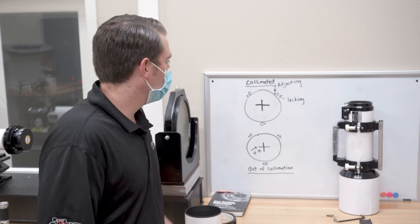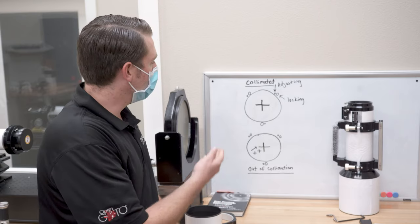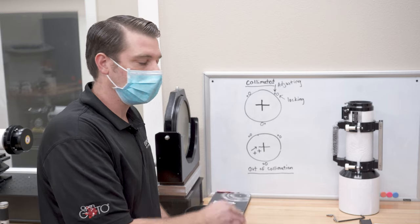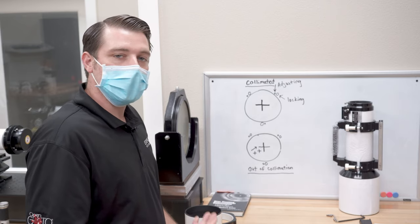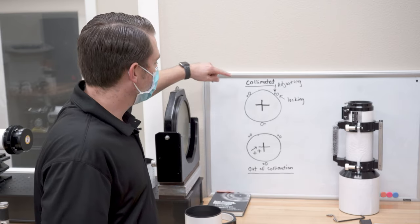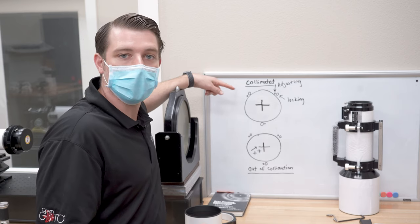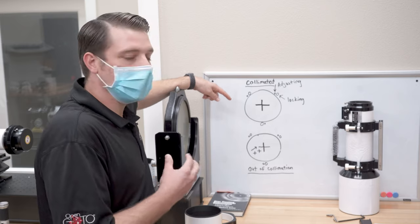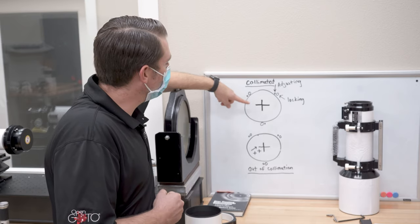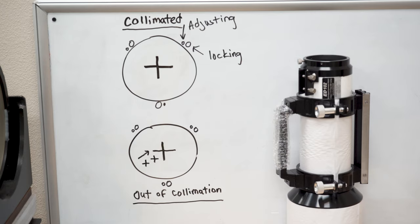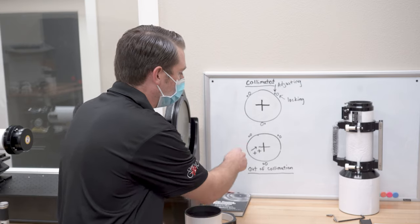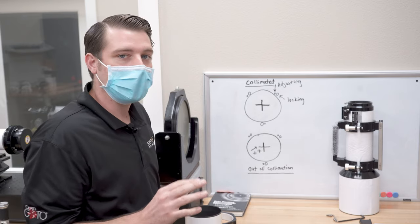Now looking at our board here, we've got two examples, one of a collimated telescope and one that is out of collimation. By looking through your Cheshire eyepiece, you're going to be able to see crosshairs or circles depending on the design of your Cheshire. A collimated telescope is going to have one solid crosshair right in the middle of that lens cell. An out of collimation telescope, you're going to see multiple crosshairs that are out of the center.